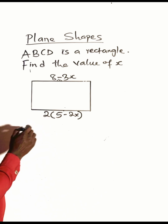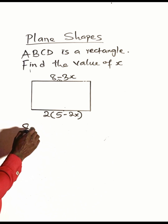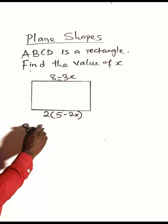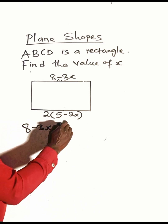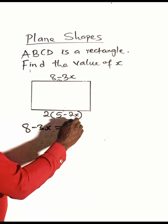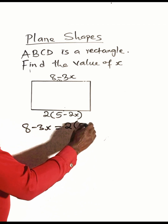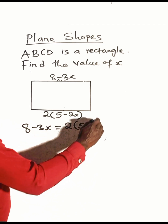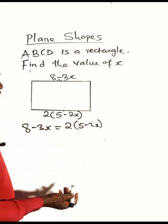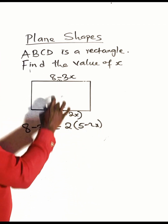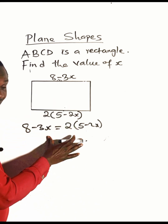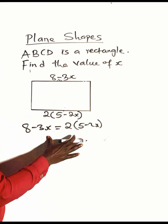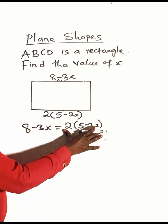That means eight minus three x is equal to two brackets five minus two x. These two sides are equal, and with this we'll be able to find the value of x.